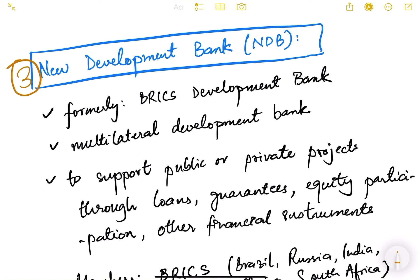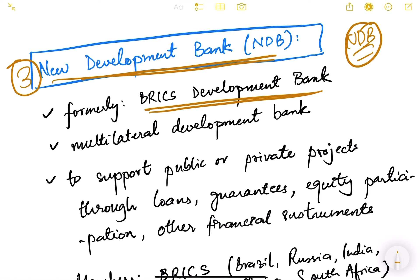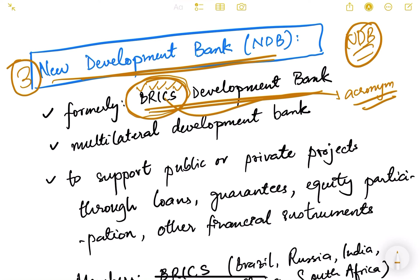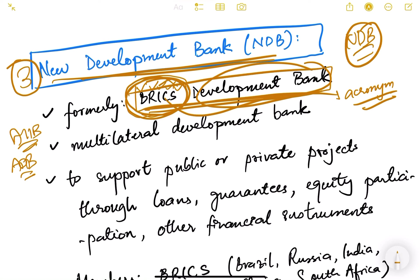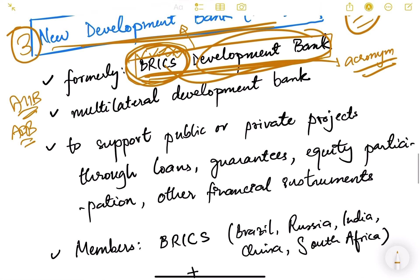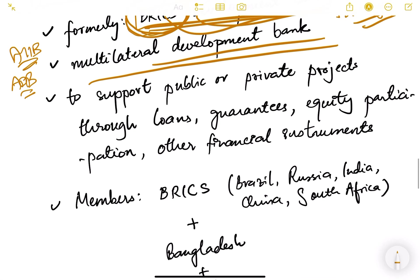The third organization is the New Development Bank, or NDB. NDB is the new name for the BRICS Development Bank. BRICS is an acronym for the five countries: Brazil, Russia, India, China, and South Africa. This BRICS grouping established a development bank, which was originally known as the BRICS Development Bank, and was later renamed the New Development Bank.